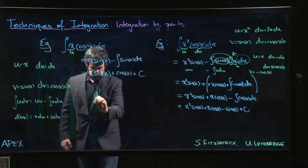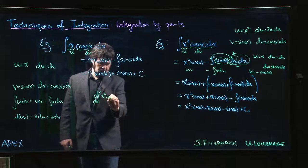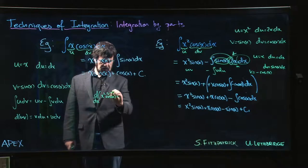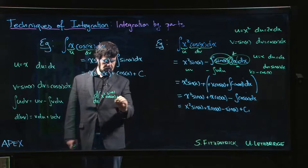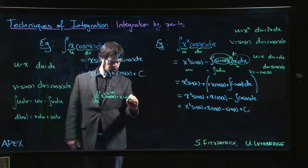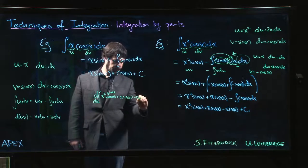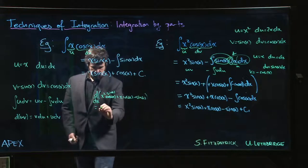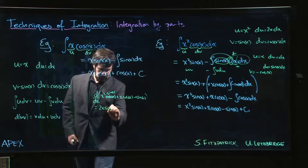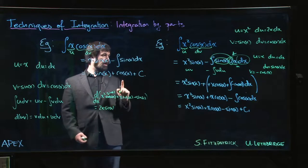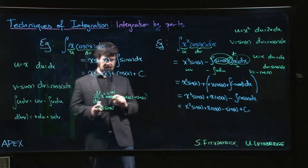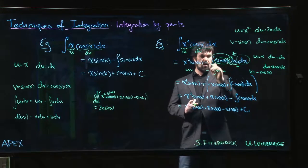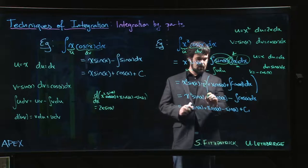So if I take the derivative of x squared cos x - or sorry, x squared sine x plus x cos x minus sin x, what do I get? Well, in this first term, I get 2x derivative of x squared times sin x. Ah, I lost something, didn't I? I already - see, this is why you check your work. Forgot about the 2.